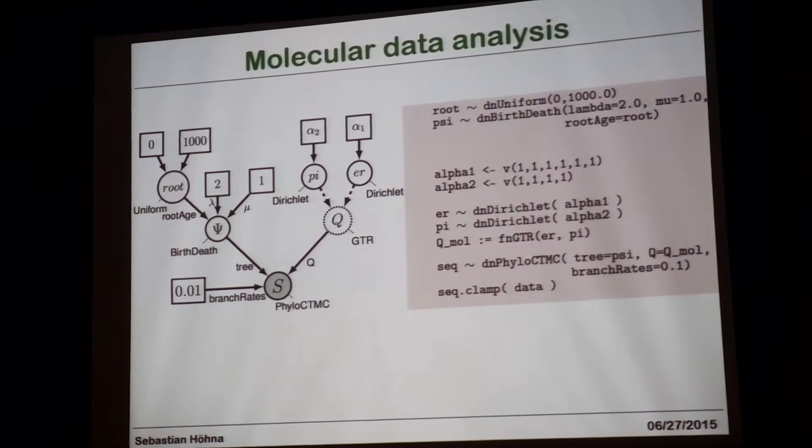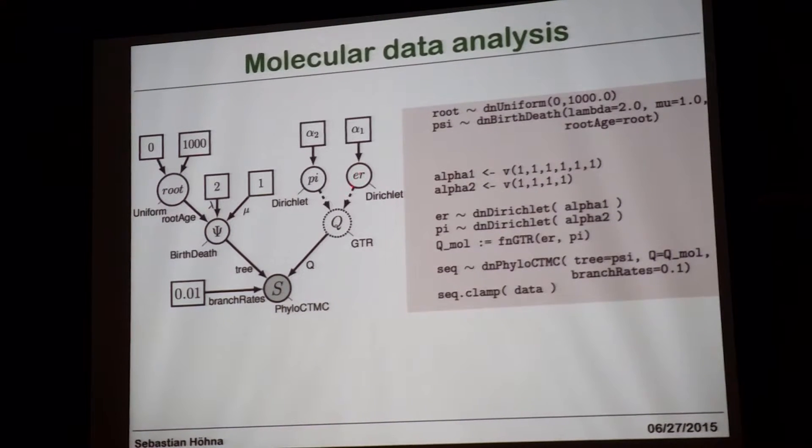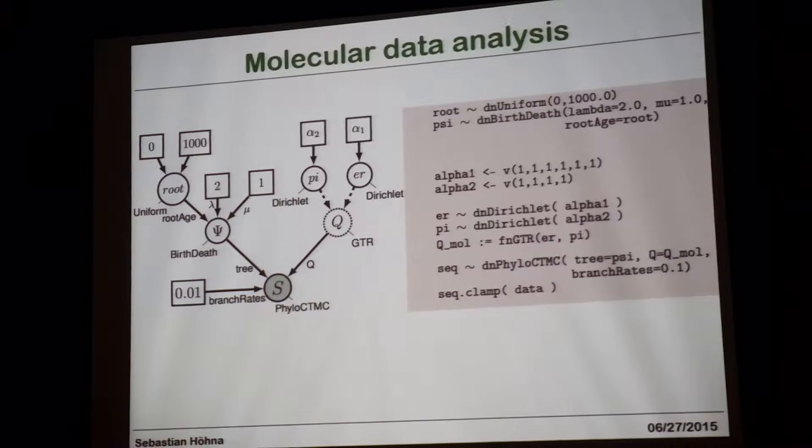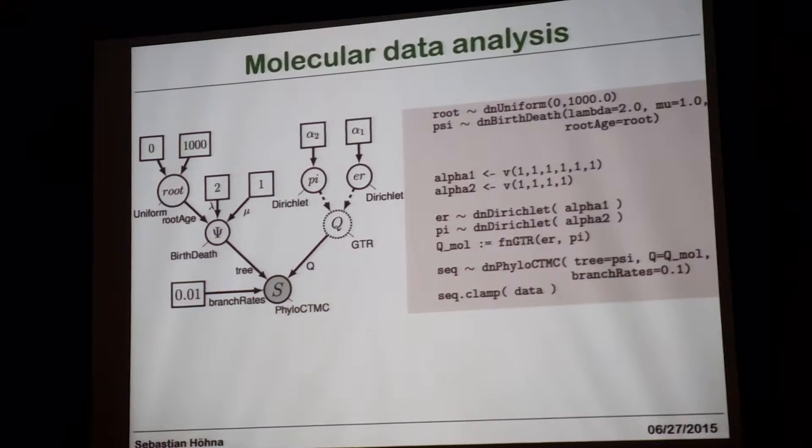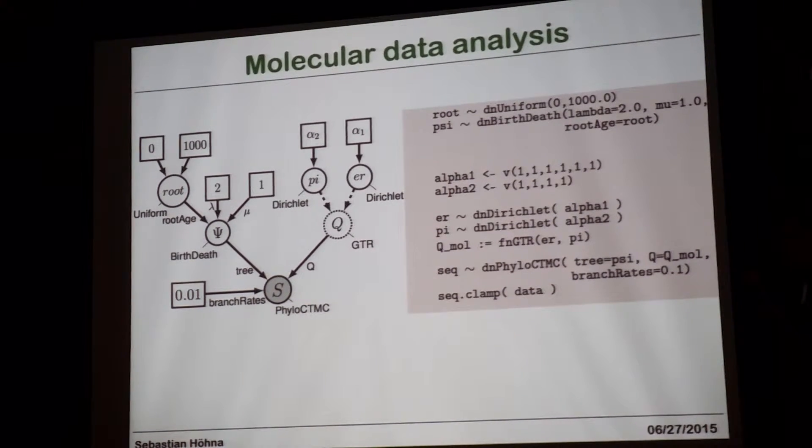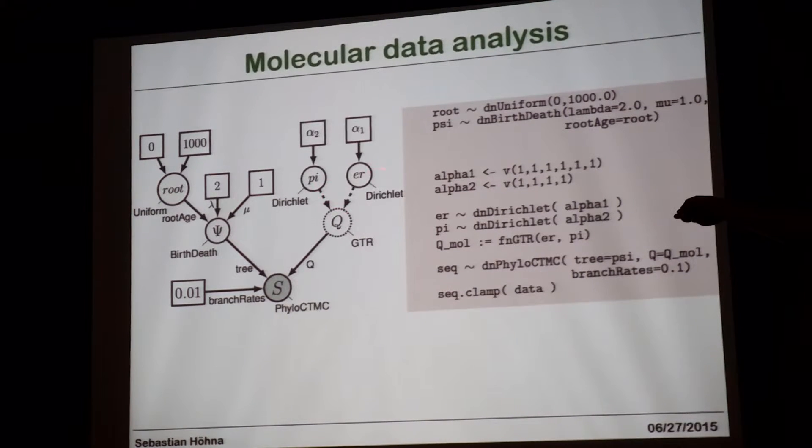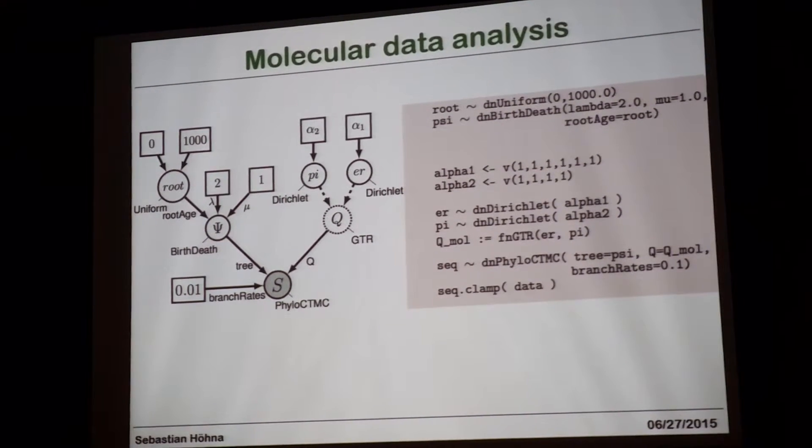Over here, we do something very similar. So we have alpha 1 and alpha 2, two fixed variables representing the fixed priors of our exchangeability rates and our base frequencies. Then we have defined that the base frequencies are drawn from the Dirichlet distribution and exchangeability rates also from a Dirichlet distribution. So that's pretty much explicitly showing. Then we have a third kind of variable, a dashed circle. And dashed circles here represent deterministic nodes. Deterministic nodes are just parameter transformations, because given the base frequencies and the exchangeability rate, I can compute deterministically what my Q matrix is over here. So that's a variable that you're not really estimating per se in your model, because you're estimating the base frequencies and the exchangeability rate. It's just a helper variable in the model.